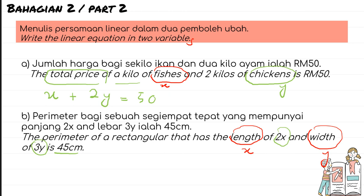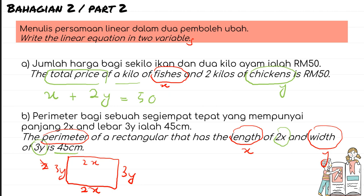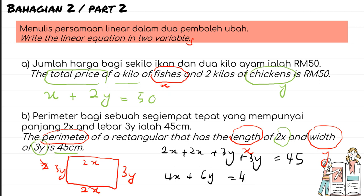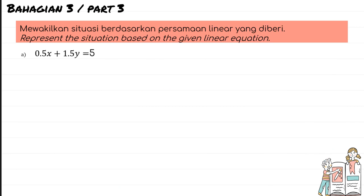Let me draw the rectangle first. The length is 2x and the width is 3y. For the perimeter, we add all sides: 2x + 2x + 3y + 3y = 45. Simplifying, we get 4x + 6y = 45. That is the linear equation in two variables for this situation.